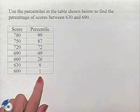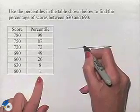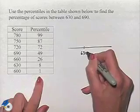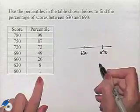To do this, we're going to start off by drawing a little number line, and we're going to place the 630 on the number line to the left of the 690.